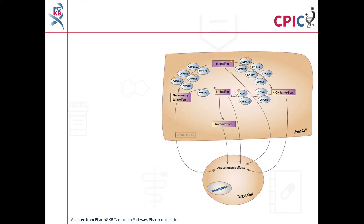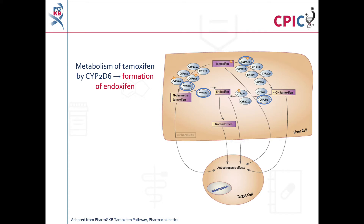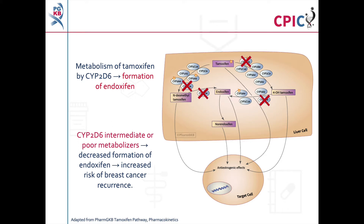This is a simplified version of the PharmGKB tamoxifen pharmacokinetics pathway. A link to the original pathway is provided in the description below this video. Tamoxifen is a selective estrogen receptor modulator used for the treatment and prevention of estrogen receptor positive breast cancer. It is metabolized by a number of enzymes including CYP2D6. Metabolism of tamoxifen leads to formation of the active metabolite endoxifen. In CYP2D6 intermediate or poor metabolizers, formation of endoxifen is reduced, which may lead to an increased risk of breast cancer recurrence in these patients.